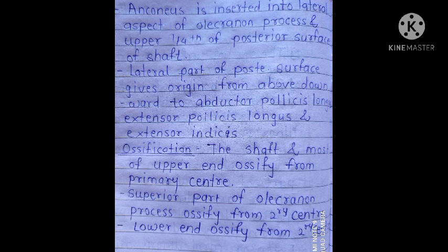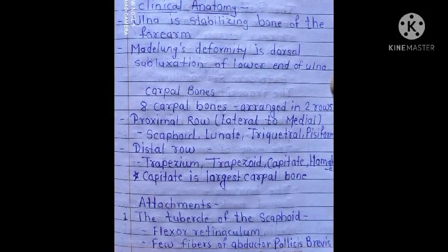The lateral part of the posterior surface gives origin, from above downward, to abductor pollicis longus, extensor pollicis longus, and extensor indicis. For ossification of the ulna: the shaft and most of the upper end ossify from the primary center. The superior part of the olecranon process and the lower end ossify from secondary centers. Clinically, the ulna is the stabilizing bone of the forearm. Madelung's deformity is a dorsal subluxation of the lower end of the ulna.